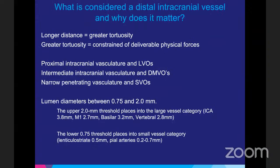So what is considered a distal vessel? Whenever we access a target with a catheter to face the clot and retrieve it, the longer the distance you travel, the greater the tortuosity, making it harder to deliver physical forces proximally. Large vessel occlusions involve proximal intracranial vasculature. Distal vessel occlusions involve intermediate and narrow vessels or small penetrating vessels, with operating parameters of 0.75 to 2 millimeters. Above 2 mm are larger vessels like ICA, M1s, M2s; below 0.75 mm are the lenticulostriate and perforating arteries.